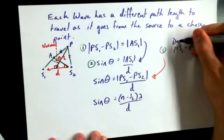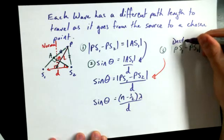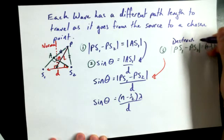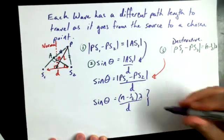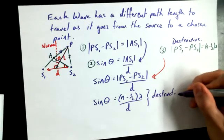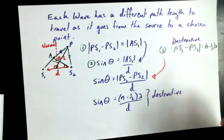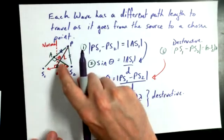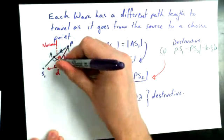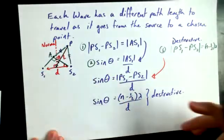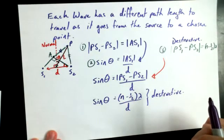over D. And since this is the destructive condition, this is also going to be our destructive condition for a known angle of this imaginary line relative to the normal and for a specific distance between two point sources for destructive interference to occur.